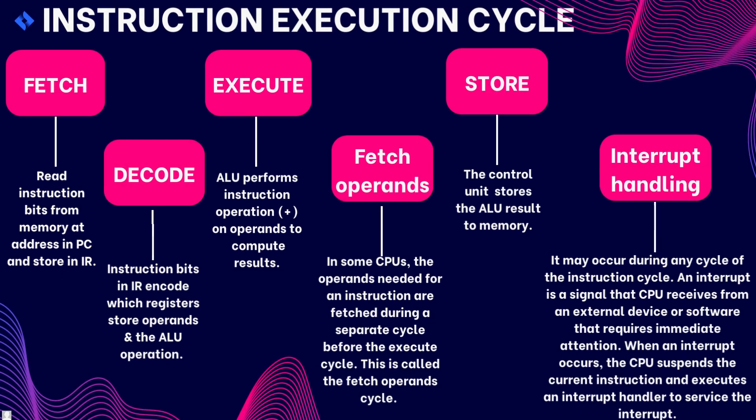The major steps in the instruction cycle are: first, fetch — read instruction bits from memory at the address in PC and store in IR; second, decode — instruction bits in IR encode which registers store operands and the ALU operations; third, execute — the ALU performs the instruction operation on operands to compute results; fourth, fetch operands — in some CPUs, the operands needed for an instruction are fetched during a separate cycle before the execute cycle, called the fetch operands cycle; fifth, store — the control unit stores the ALU result to memory. The last step is interrupt handling, which may occur during any cycle of the instruction cycle.